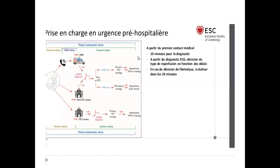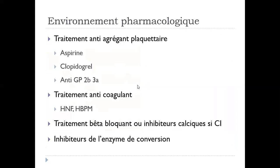Ce schéma-là va vous résumer les différentes situations. Vous avez une douleur thoracique. Le patient qui consulte pour une douleur thoracique peut appeler le SAMU. Le SAMU va venir, il va le transférer, il va poser le diagnostic du syndrome coronarien aigu ST+. Si une salle de cathétérisme est disponible dans les 120 minutes, on va opter pour l'angioplastie primaire. Si on est à plus de 120 minutes, on va opter pour la thrombolyse et le transfert du patient dans un centre où il y a une salle de cathétérisme.